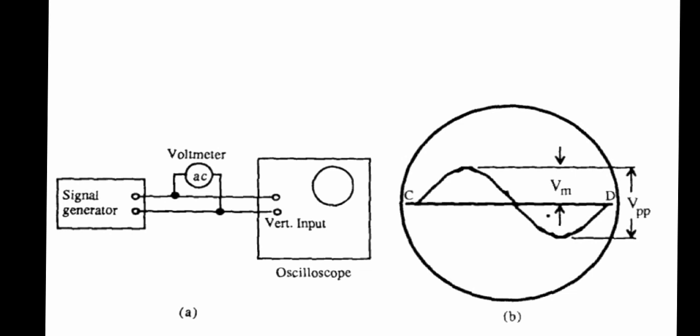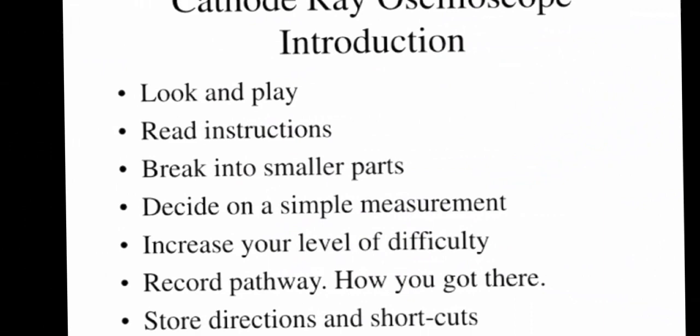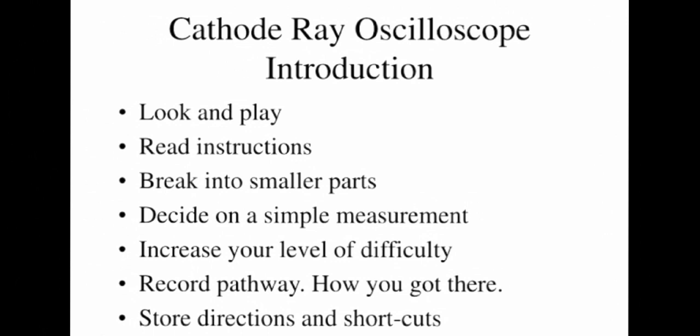A graph is obtained which is some above the line and some below the line. The cathode ray oscilloscope looks complex, so break into smaller parts, decide on simple measurements, increase your level of difficulty, and record the pathway and store directions.